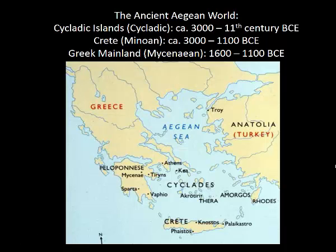This map shares an important characteristic with most maps we've been looking at in this class: the geography is dominated by water. The ancient Aegean world was made up of islands as well as peninsulas, creating a culture dominated by the sea. The sea functioned in many ways — providing food through fishing, facilitating trade, and acting as a natural form of defense, since it's much harder to sneak up on someone when your boat has to come ashore.